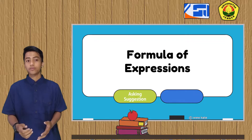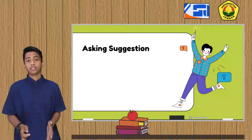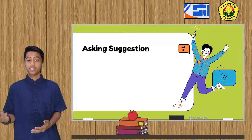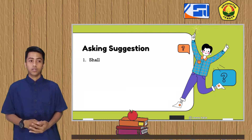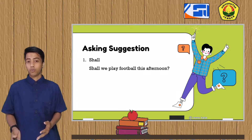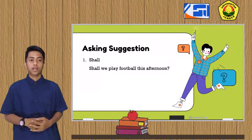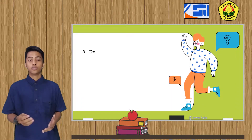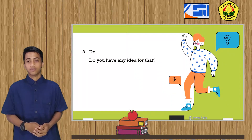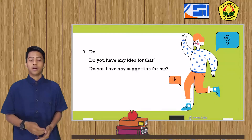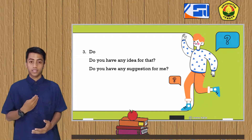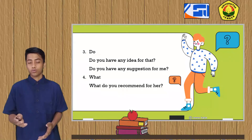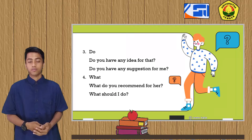Formula of expression. First, we have asking suggestion. Ketika kalian ingin menanyakan atau membutuhkan saran dari orang lain, kalian bisa menggunakan 'shall'. Seperti contoh: 'Shall we play football this afternoon?' — Sankah kita bermain sepak bola sore ini? Yang kedua, kalian bisa menggunakan 'should': 'Should we do something?' — Haruskah kita melakukan sesuatu? Yang ketiga, gunakan 'do': 'Do you have any idea for that?' atau 'Do you have any suggestion for me?' Yang keempat, gunakan 'what': 'What do you recommend for her?' Dan yang terakhir: 'What should I do?' — Apa yang harus aku lakukan?